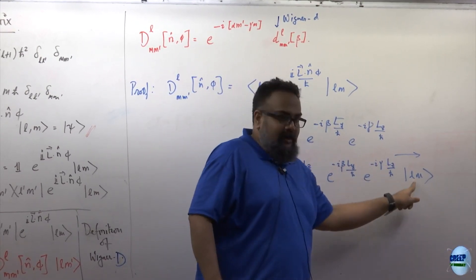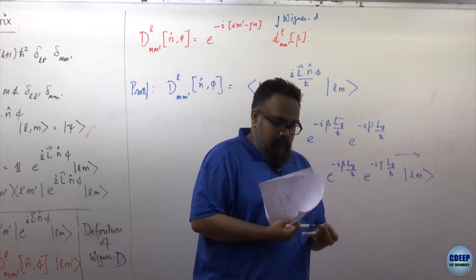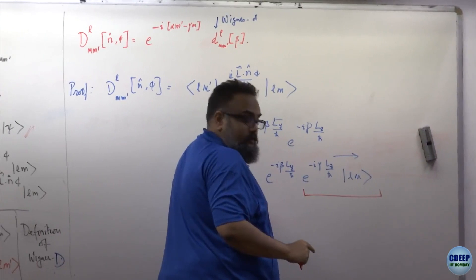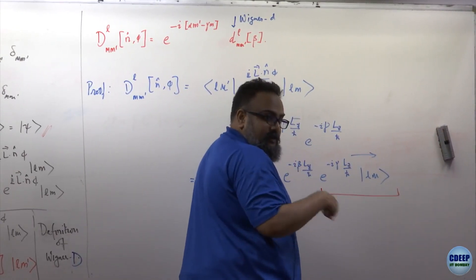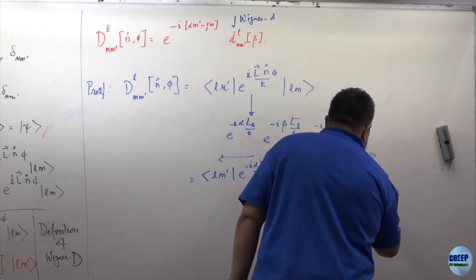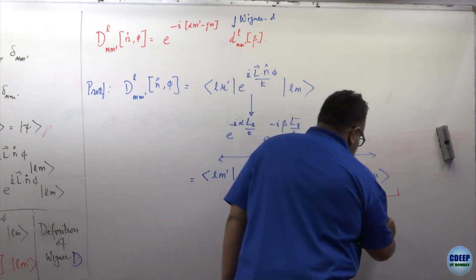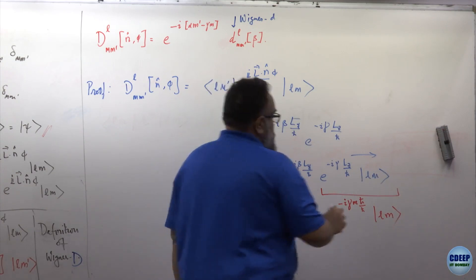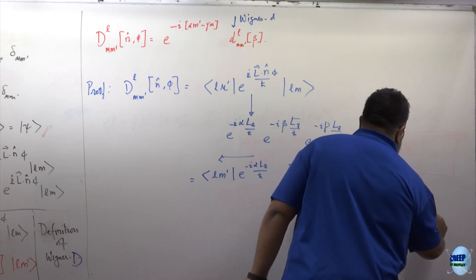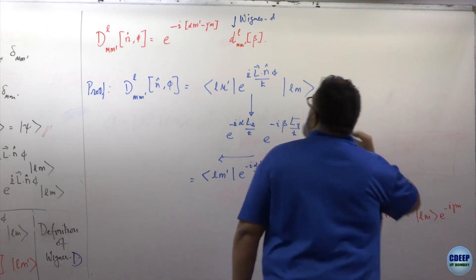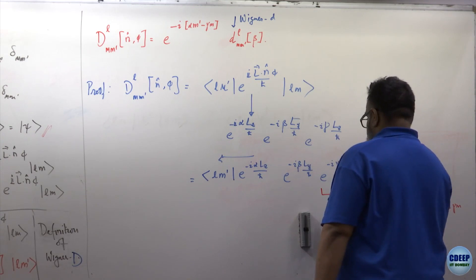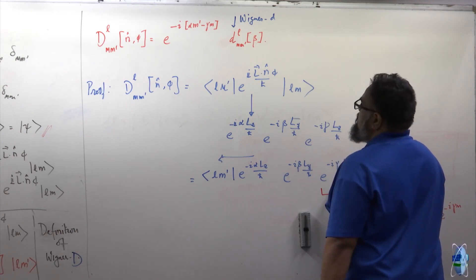So what you can write is ⟨L,M'| e to the minus i·alpha·L_z/ℏ acting to the left, times e to the minus i·beta·L_y/ℏ, times e to the minus i·gamma·L_z/ℏ acting on |L,M⟩. The right-hand side produces e to the minus i·gamma·m, and the left bra produces e to the plus i·alpha·m'. So the result is e to the i·(alpha·m' minus gamma·m) times the small-d matrix element ⟨L,M'| e to the minus i·beta·L_y/ℏ |L,M⟩.